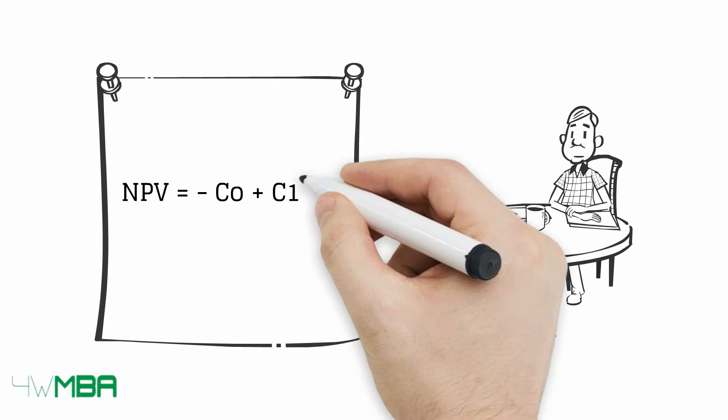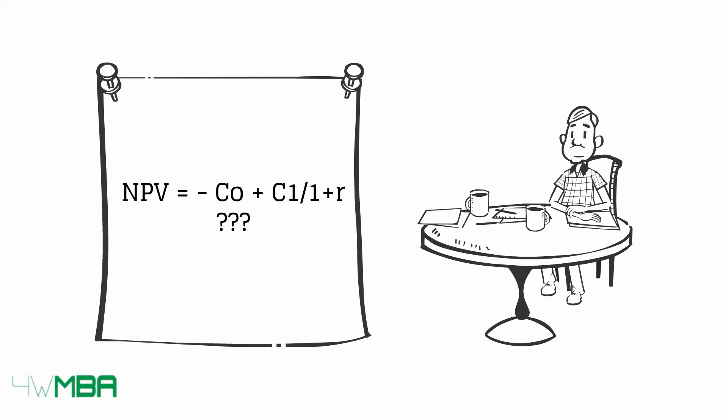Let me show you a formula: NPV equals minus C0 plus C1 over 1 plus R. Are you confused? Don't worry, you won't be at the end of the video.